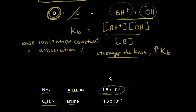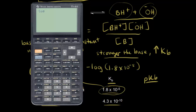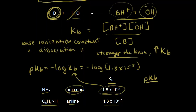Just as we talked about KA and pKA, we can also calculate pKB. The pKB equals the negative log of KB. For ammonia, pKB = -log(1.8 × 10⁻⁵) = 4.74. For aniline, plugging in its KB gives a pKB of 9.37.